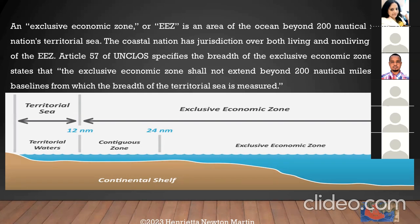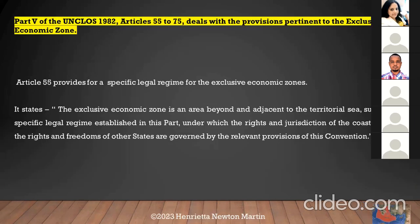The coastal nation has jurisdiction over both living and non-living resources of the EEZ. Article 57 of UNCLOS specifies the breadth of the EEZ, stating that it shall not extend beyond 200 nautical miles from the baseline from which the breadth of the territorial sea is measured. Part Five of the Convention, Articles 55 to 75, deals with the Exclusive Economic Zone.